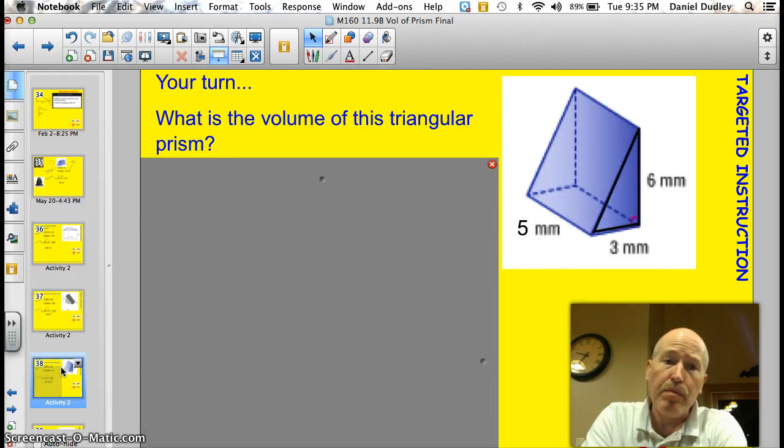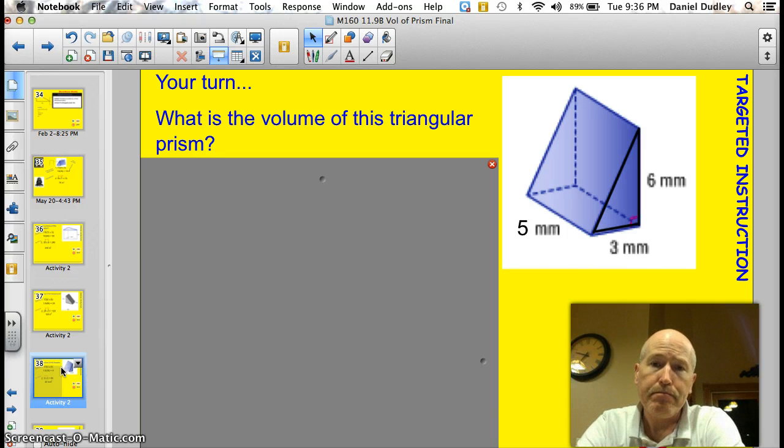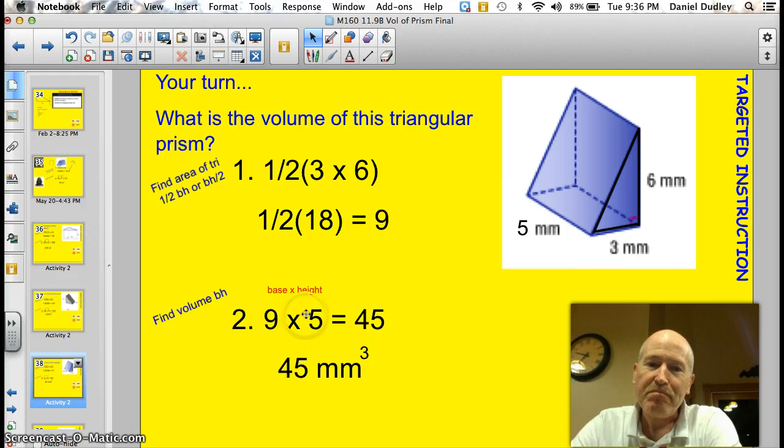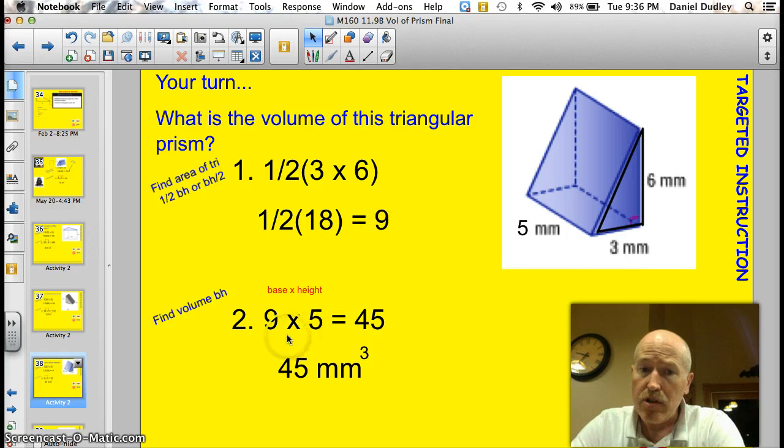It's ready for you to try a problem. Go ahead and pause the video, and see if you can find what the volume of this triangular prism is. Go ahead. I see dead people. I know you wanted me to say that in the last video, so I did. All right. Let's see how you did. Well, the base of it is 3, and the height of the base is 6. So, there's my triangle over there. 3 by 6. So, I took one half, 3 times 6. That's the same as one half times 18, and that, of course, is 9. So, my base is 9. My height is 5. It's laying on its side, but there's my height. 9 times 5 is 45. 45 millimeters cubed. I bet you you got that one right.